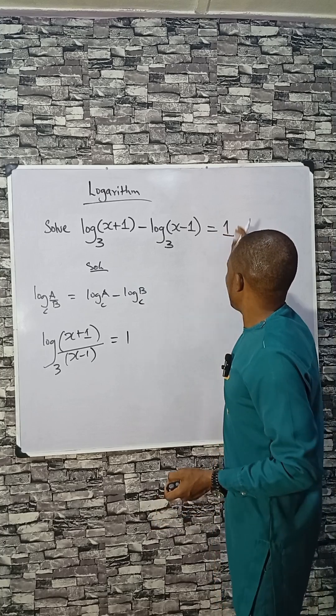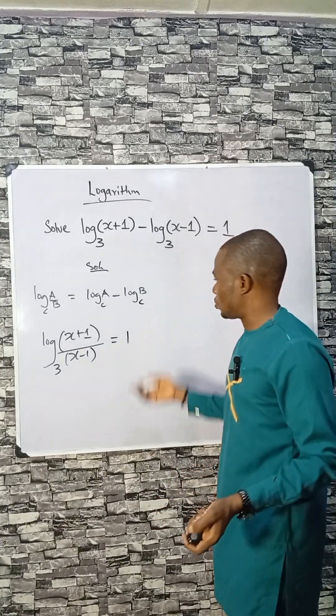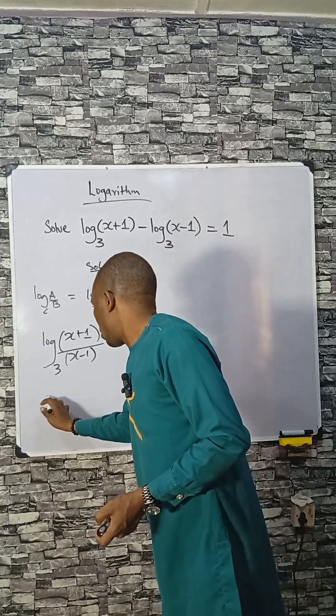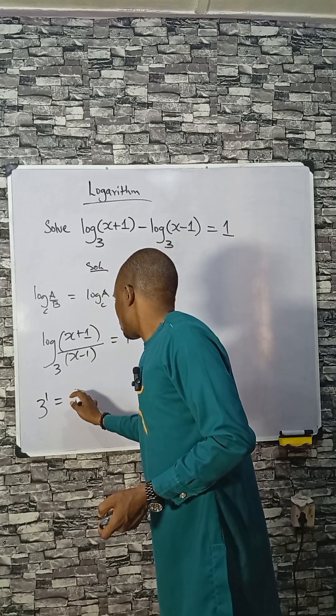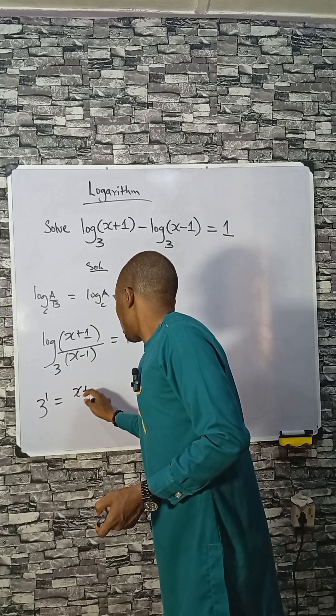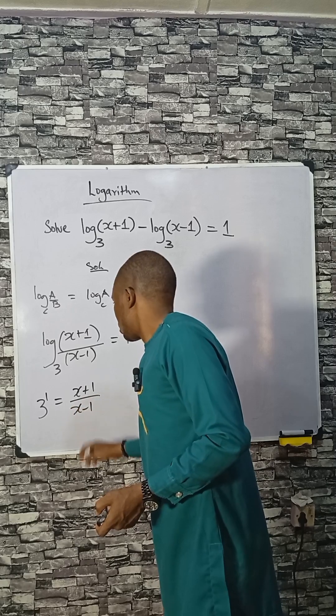Of course I can write this as log(3) base 3 which is still 1. Now 3 raised to the power 1 equals (x+1) divided by (x-1).